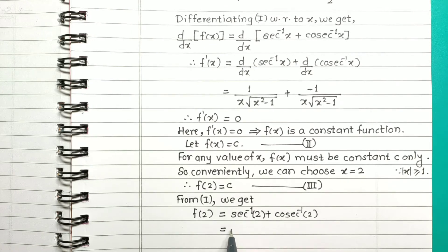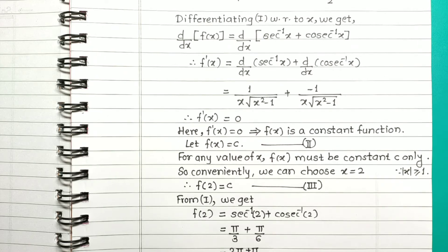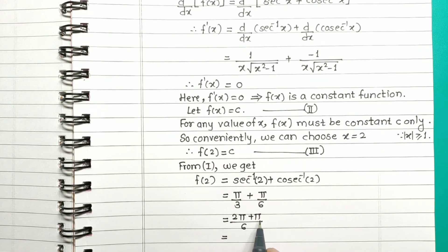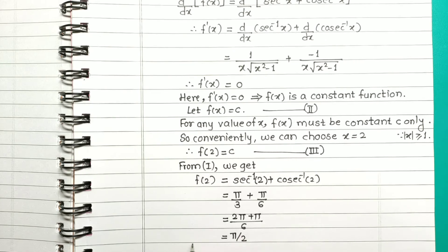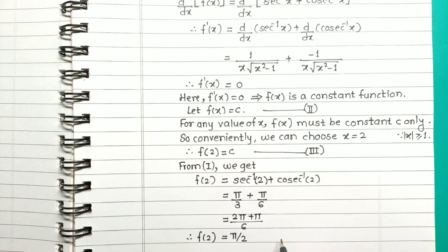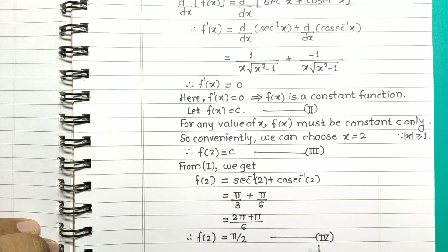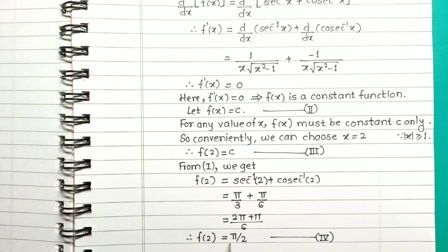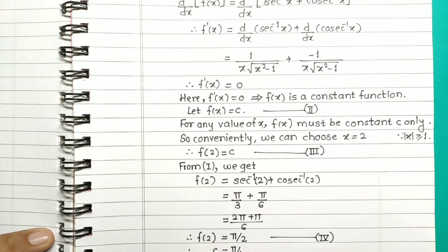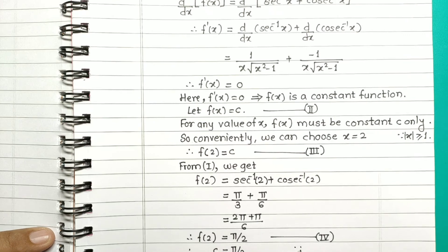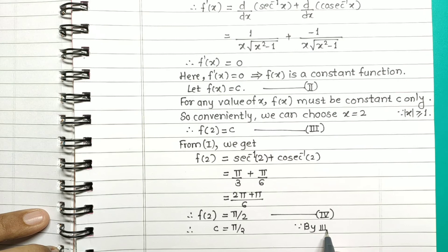We know that sec inverse of 2 is pi by 3 and cosec inverse of 2 is pi by 6. So this is pi by 3 plus pi by 6, which equals 3 pi by 6, and therefore it is pi by 2. So f of 2 is equal to pi by 2 — call this equation 4. In equation 3 we have f of 2 equal to c, and in equation 4 we have f of 2 equal to pi by 2. So from equations 3 and 4, c is equal to pi by 2 — call this equation 5.